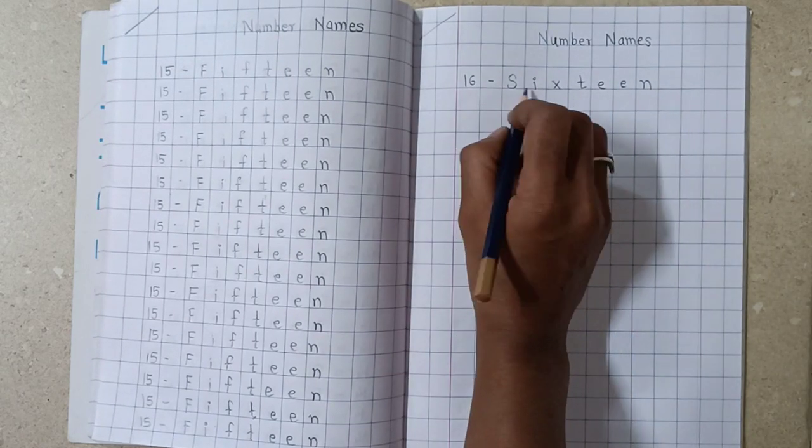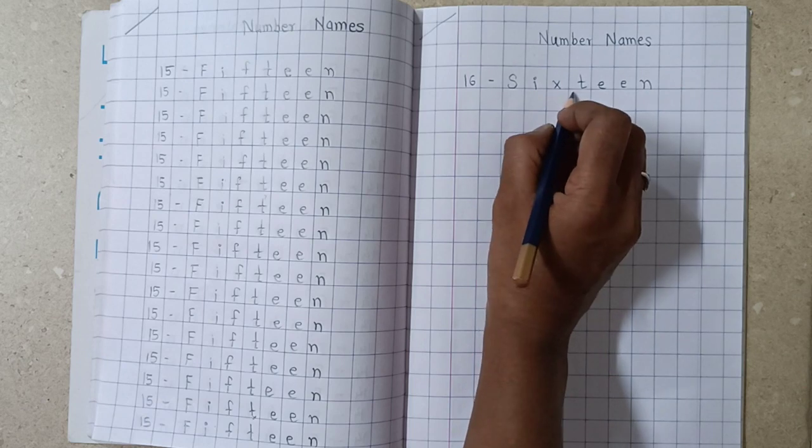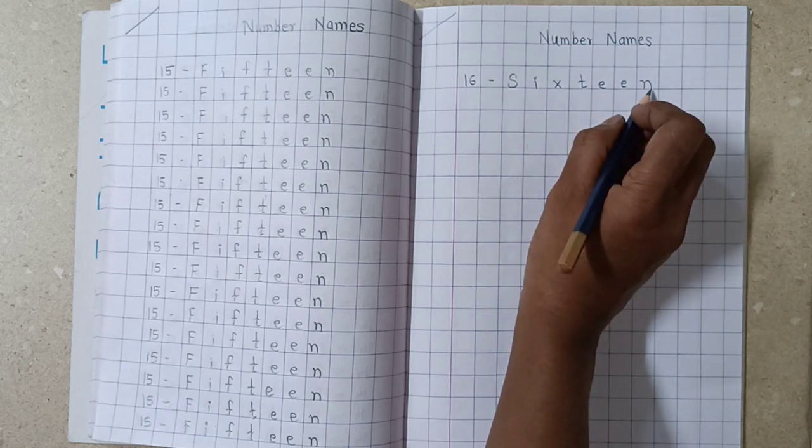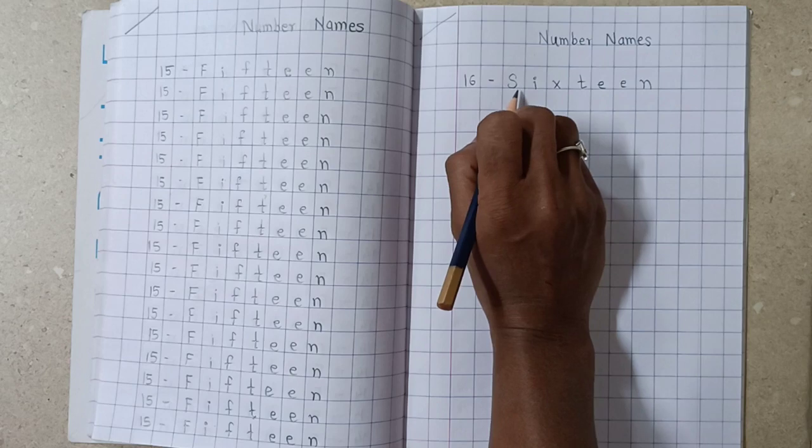Okay, 6 ka jo spelling hai, S-I-X, us ko just teen, join ka nahi, okay? Itna simple hai, 16.